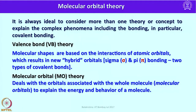Keeping in mind the previous structure and bonding concepts we came across, it is always ideal to consider more than one theory or concept to explain the complex phenomena that occur in a molecule, particularly bonding. According to valence bond theory, molecular shapes are essentially based on the interaction of atomic orbitals which results in new hybrid orbitals that can explain both sigma bonding as well as pi bonding.